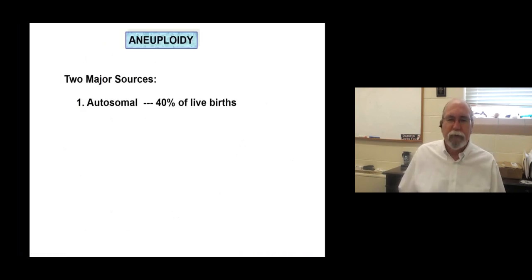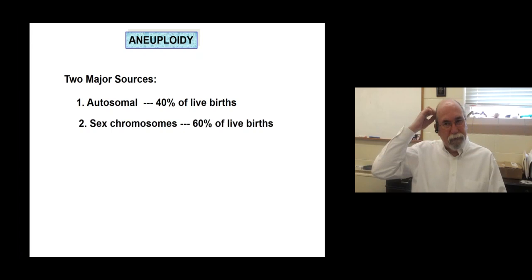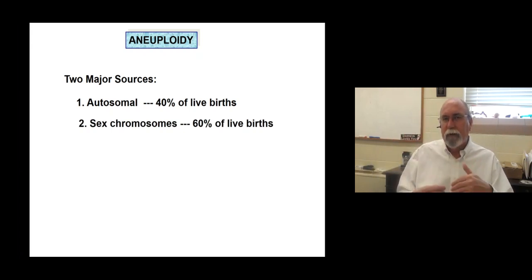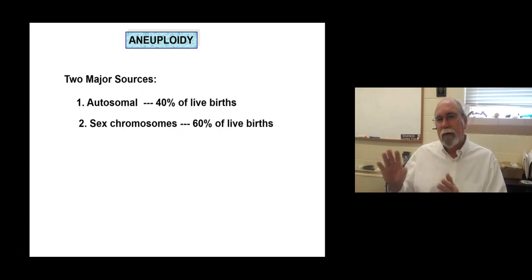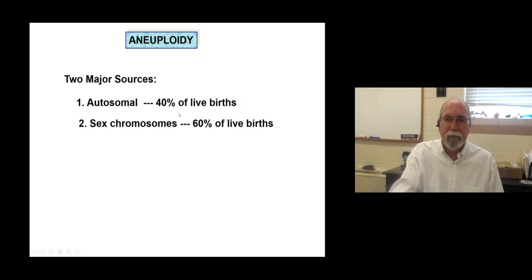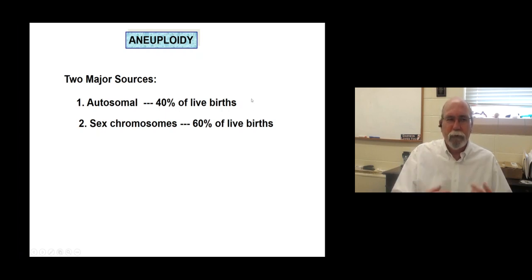Autosomal variations account for far less of the ones that make it to live birth. Remember we talked about how less than one percent of fertilized eggs that implant with a chromosome anomaly will make it to live birth. Of those that do make it, the vast majority involve sex chromosomal anomalies, with autosomal anomalies being significantly fewer in number.